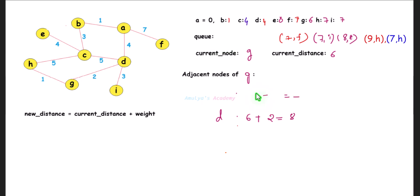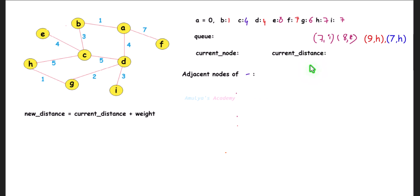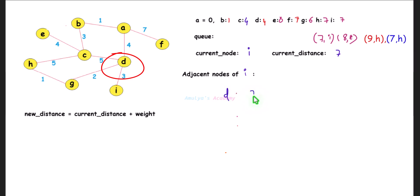There are three nodes with distance 7 in the queue: F, I, and H. Remove (7, F) first. Adjacent node of F is A; new distance: 7 + 7 = 14 — A's distance is 0, so skip it. Next remove (7, I). Adjacent node of I is D; new distance: 7 + 3 = 10 — D's distance is 4, so 10 is greater; skip it.